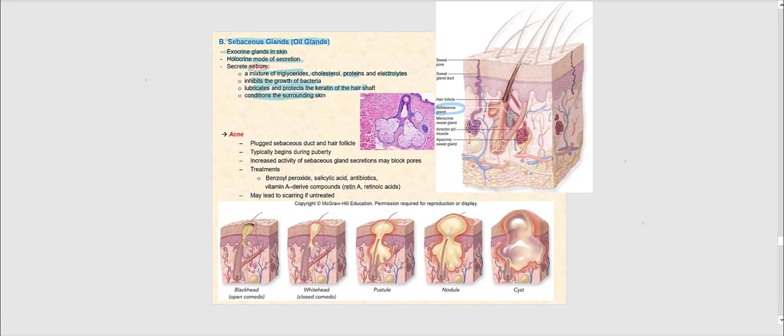Sometimes the sebaceous duct that leads into the hair follicle can become plugged, and when that occurs you have what's called acne. This typically begins during the onset of puberty when testosterone levels start to increase. With increasing testosterone levels, there is an increase in the activity of the sebaceous glands — testosterone increases sebum secretion, which can potentially clog or plug up not only the sebaceous duct but the hair follicle itself.